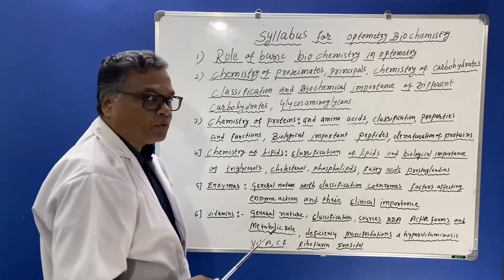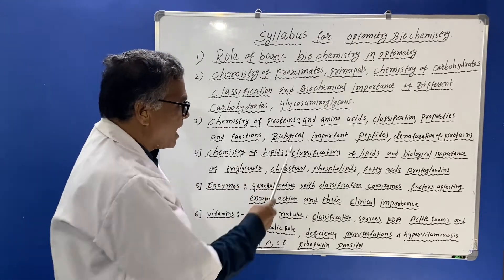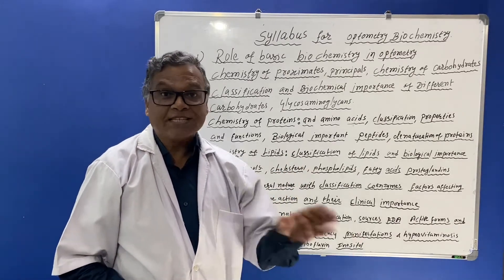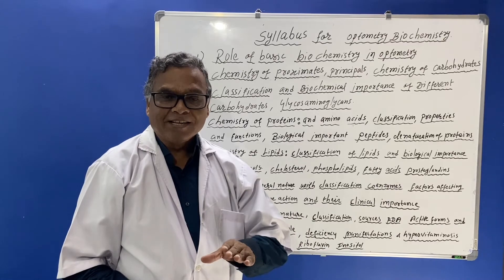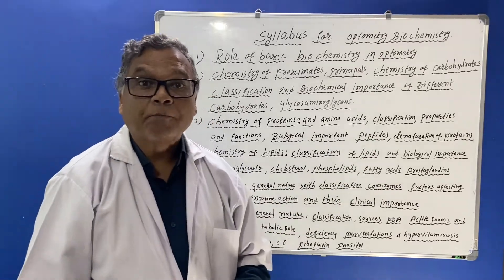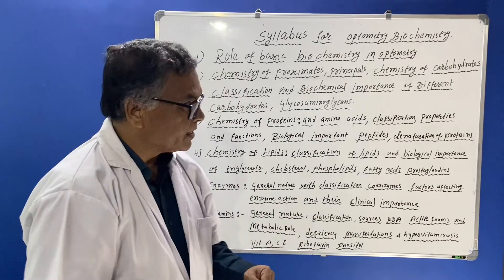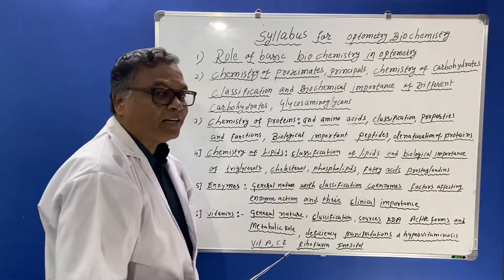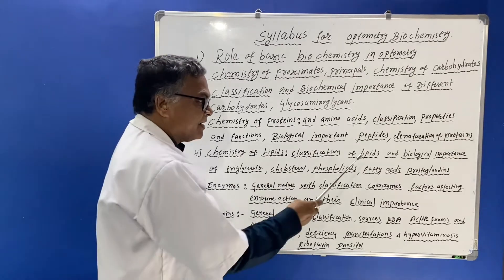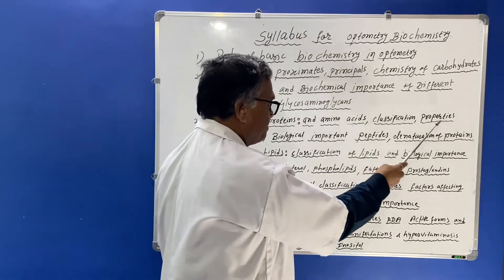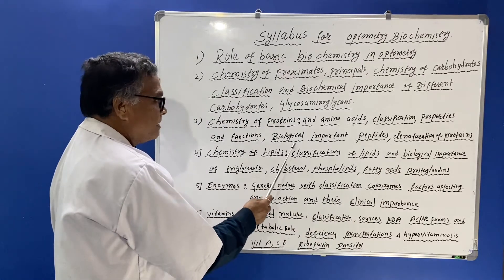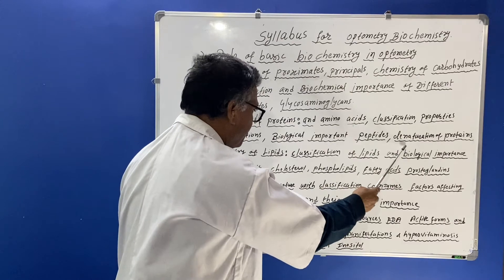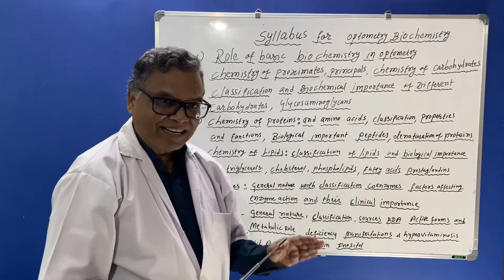The third chapter is chemistry of proteins. You have to learn chemistry of proteins and amino acids — these are two different things. A number of amino acids come together to form a protein molecule. So you have to learn the chemistry of amino acids and their classification.